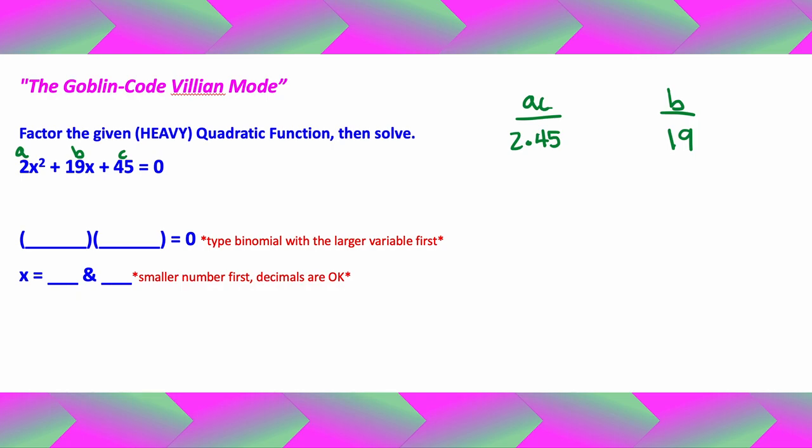Notice I already have the AC method ready to go. When it's a heavy trinomial, A, B, and C, we need to use to find the magic numbers to make the binomials and then we can solve them. So here we go.